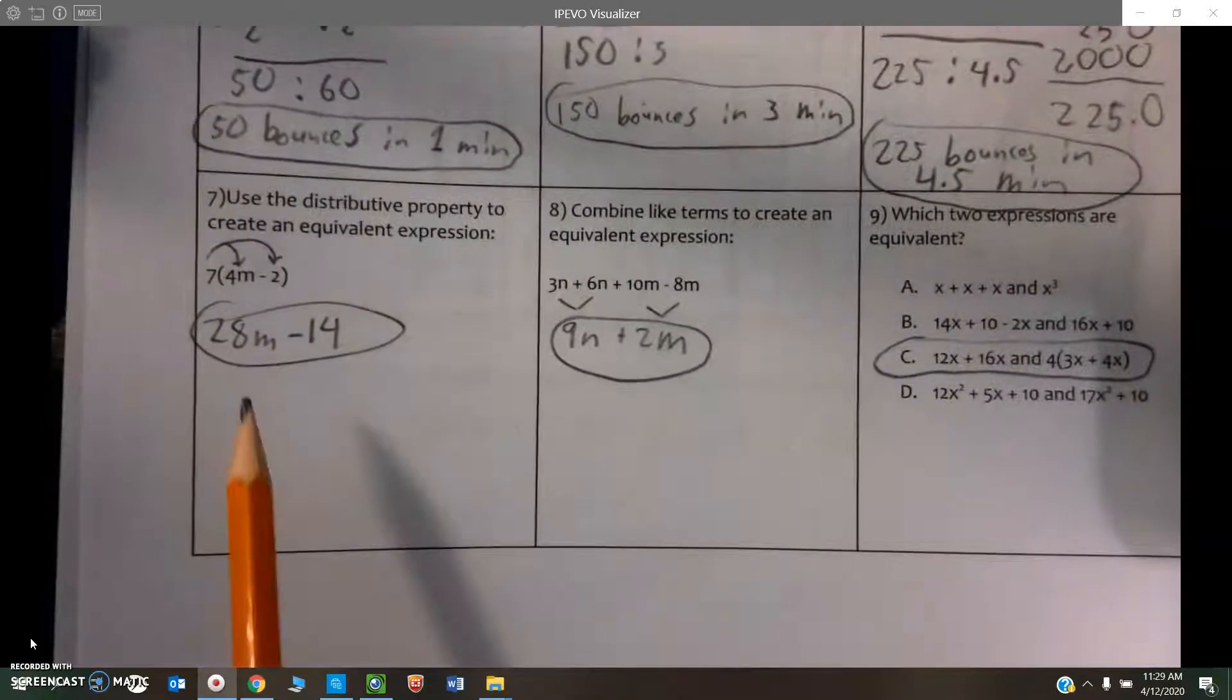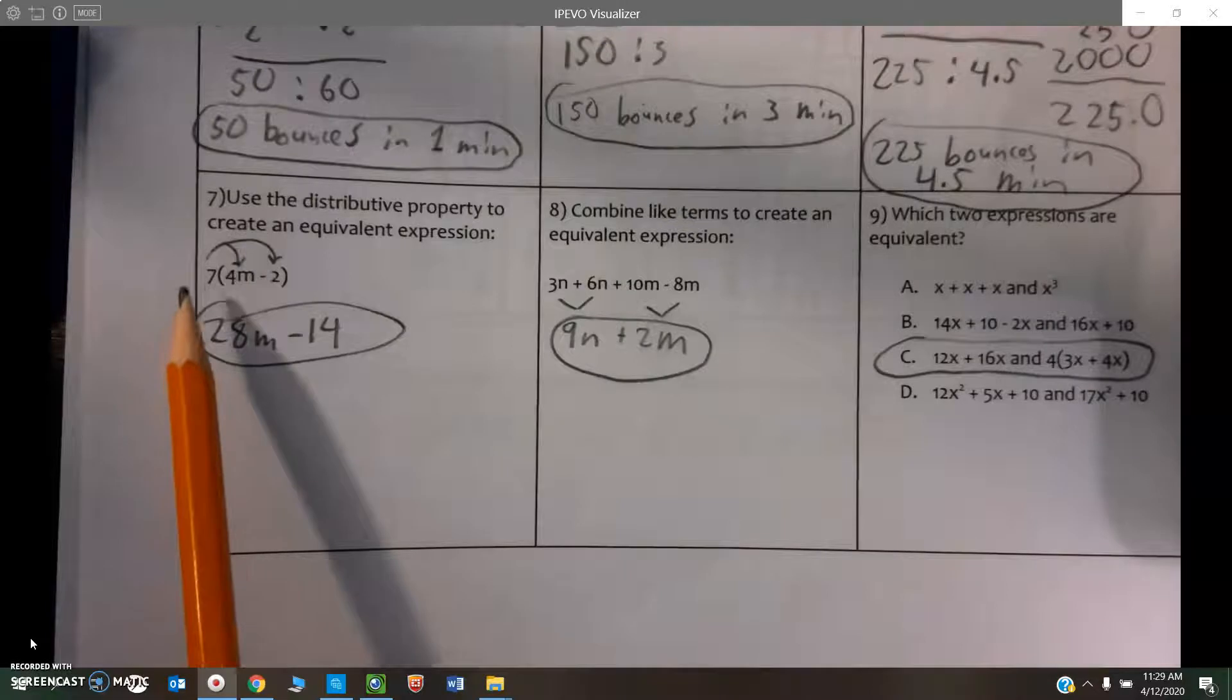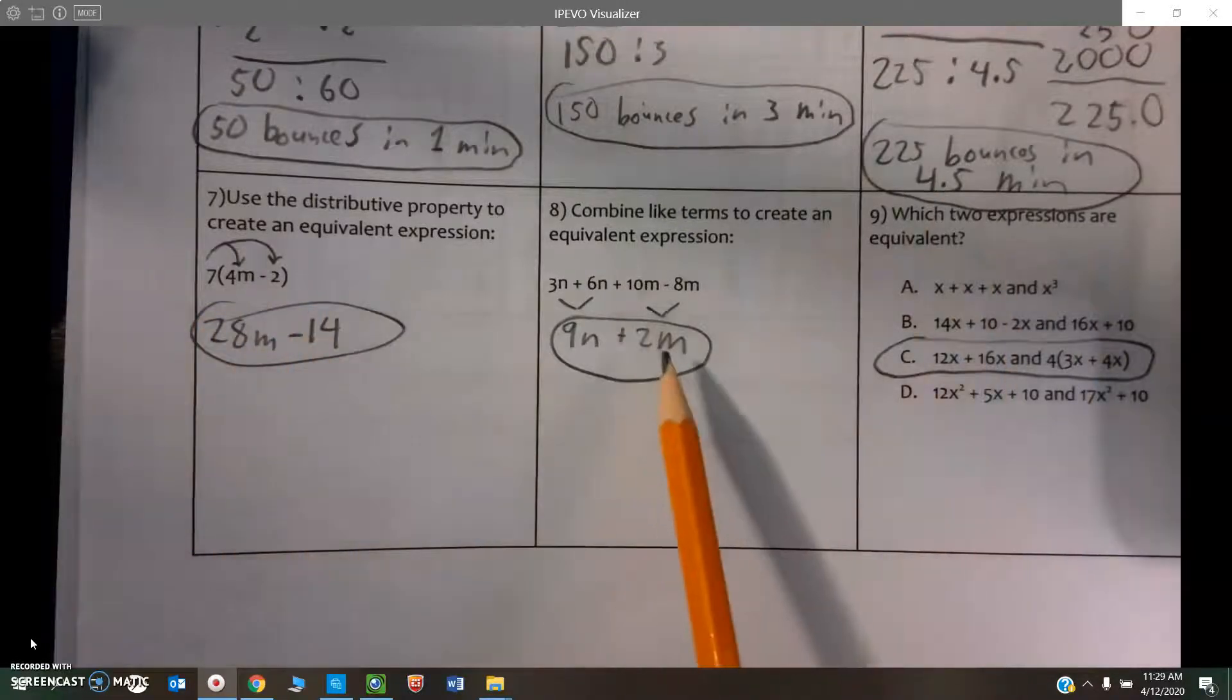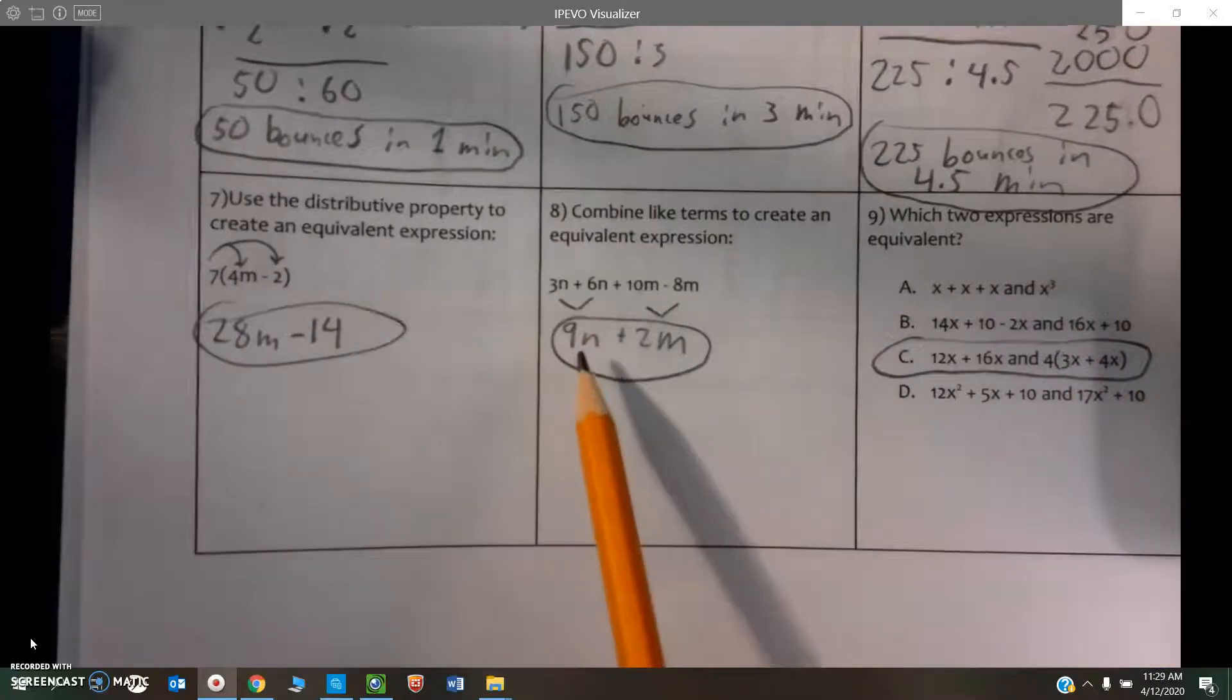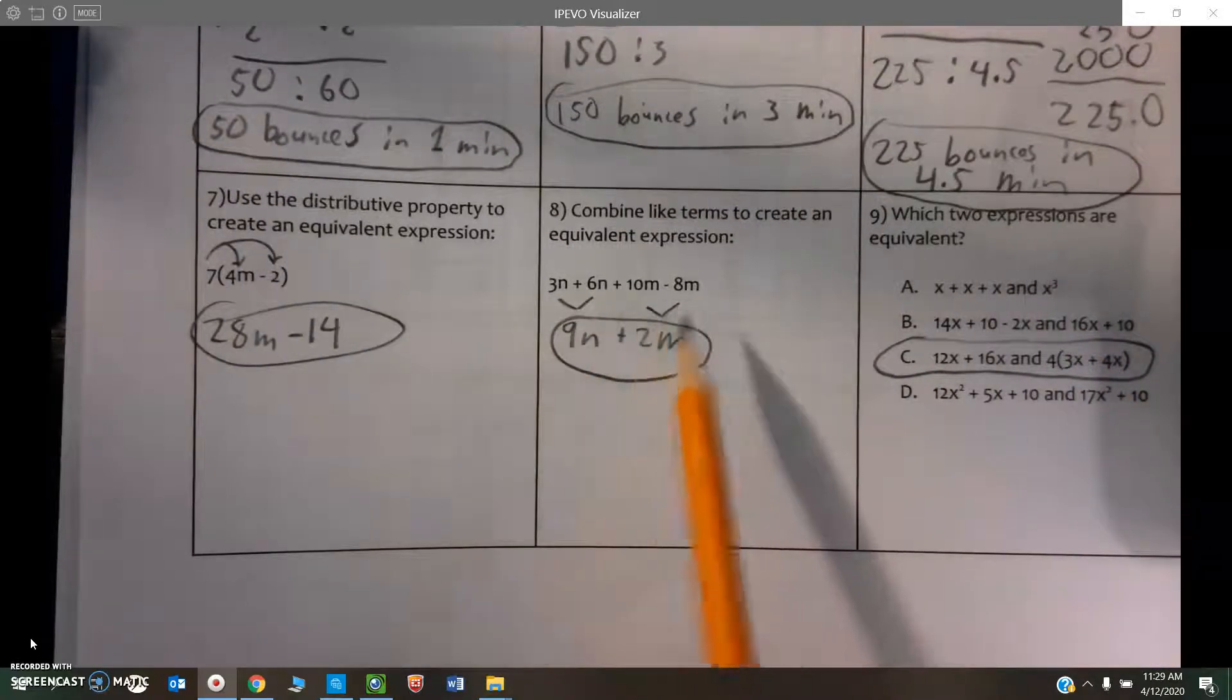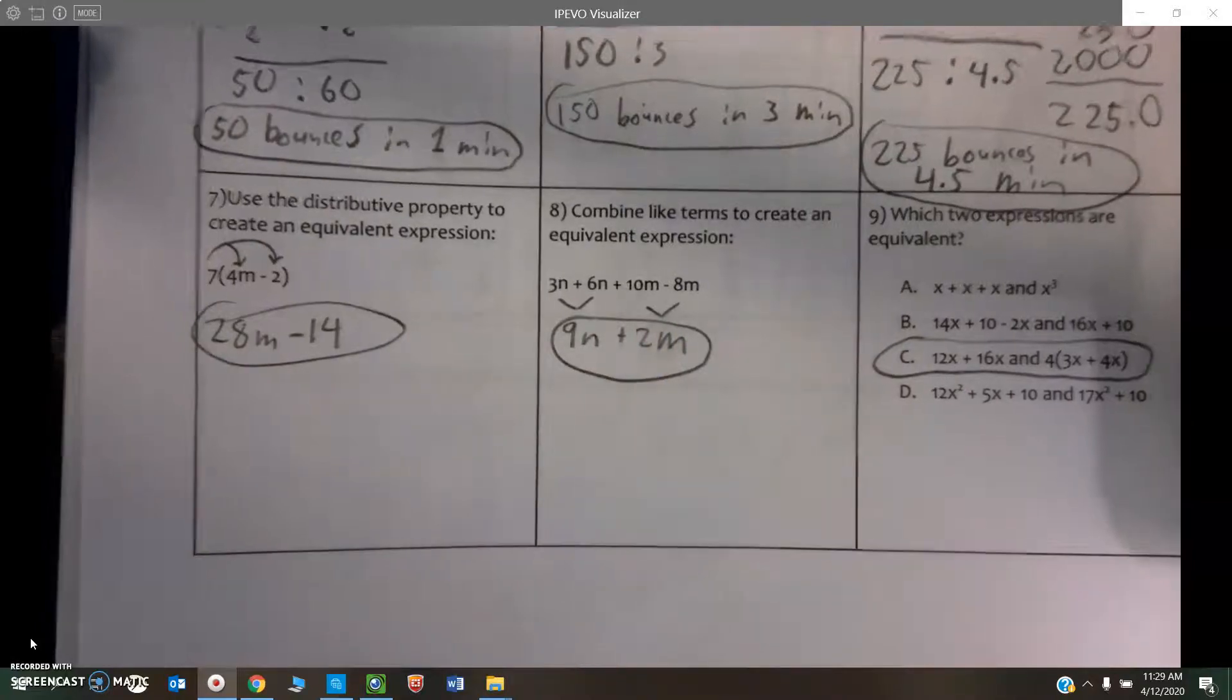Down below, we've got our distributive property. Number on the outside multiplies by each value on the inside. And then over here, we've got to combine like terms. The first two both have n's, so they can combine. The second two both have m's, so they can combine.